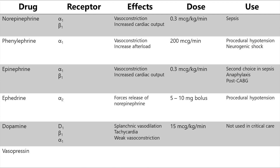Vasopressin is secreted from the posterior pituitary gland, and in shock it binds to V1 receptors to cause vasoconstriction. It's primarily used as a second-line agent in vasodilatory shock, and has a fixed dose of 0.04 units per minute with no titration.